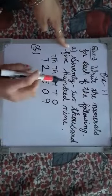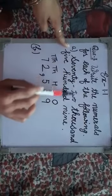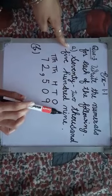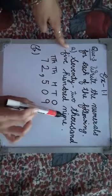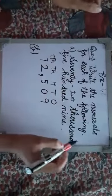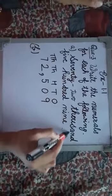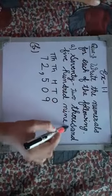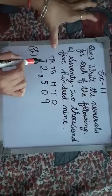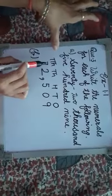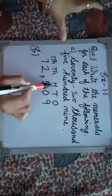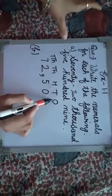Our first part: we have been given the number name 72,509. How do we write the numeral for this number name? In this number name, the thousands place is the highest position. So here we start our place values from the 10,000 place. We write: 10,000, thousand, hundred, tens, and then ones.